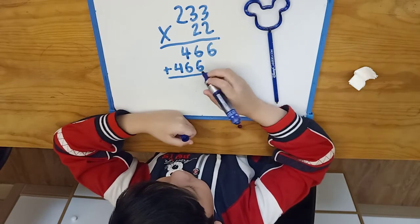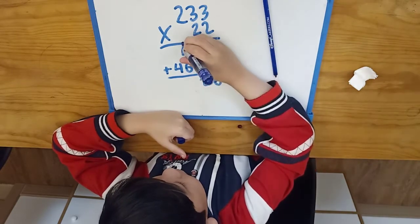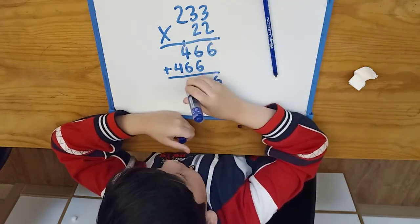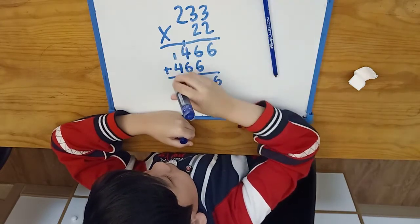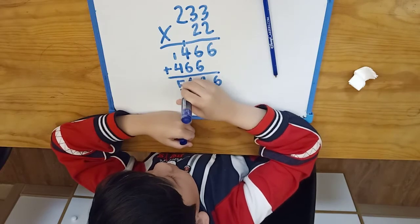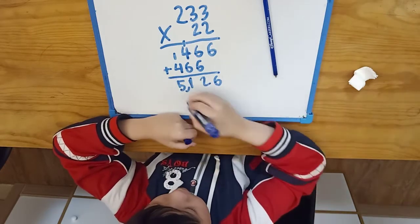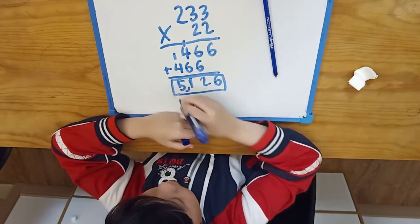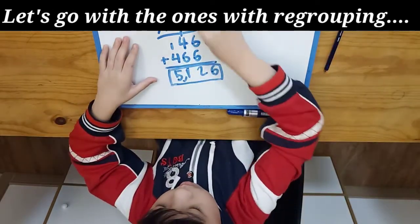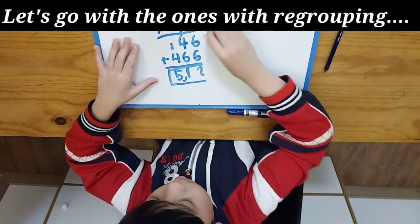Bring down 6. 6 plus 6 is 12. Carry 1. 6 plus 4 plus 1 is 11. Carry 1. 4 plus 1 is 5. The answer is 5,126. Let's go with the ones with regrouping.